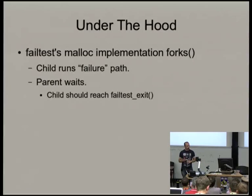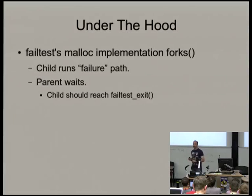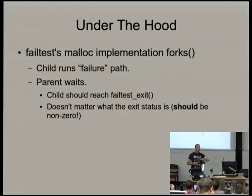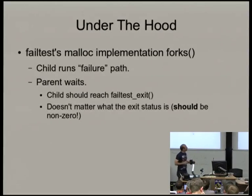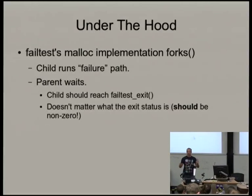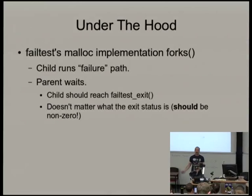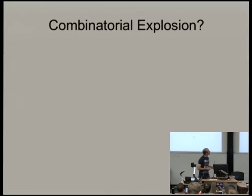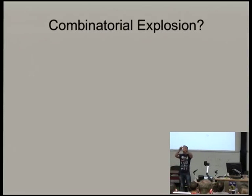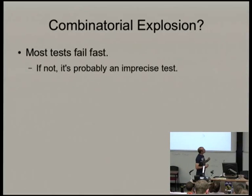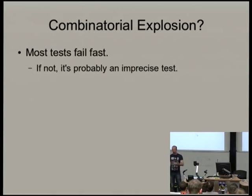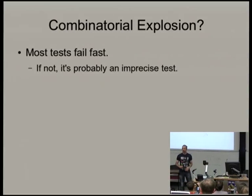The child can fail — exit with non-zero — but it must not explode. Now you might worry about combinatorial explosion: if we fail every test, with 10 tests that's 1024 different possibilities. That explosion doesn't quite happen because most tests fail fast. Once you inject a failure, the test fails and exits immediately, so you don't run the rest. If a test doesn't fail fast, it's probably an imprecise test — your test should check for the specific error number expected.